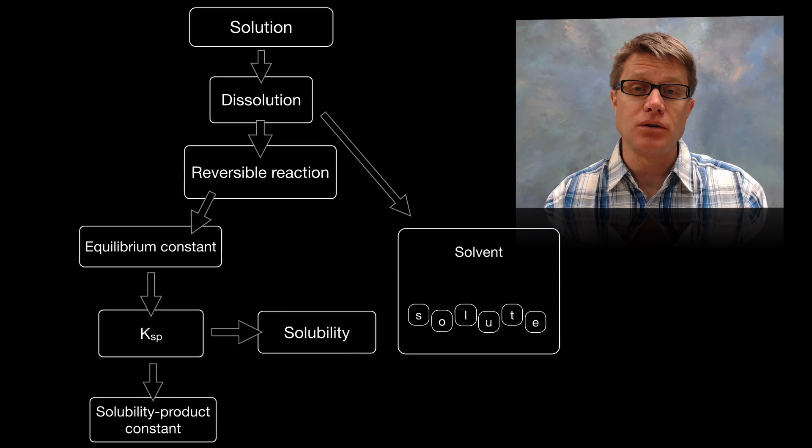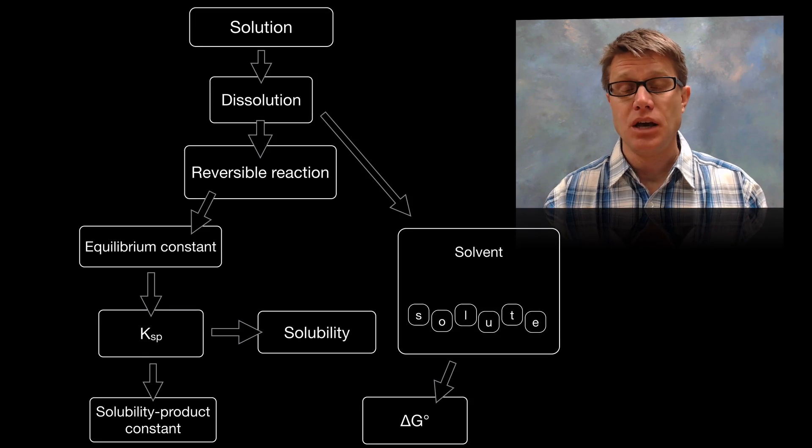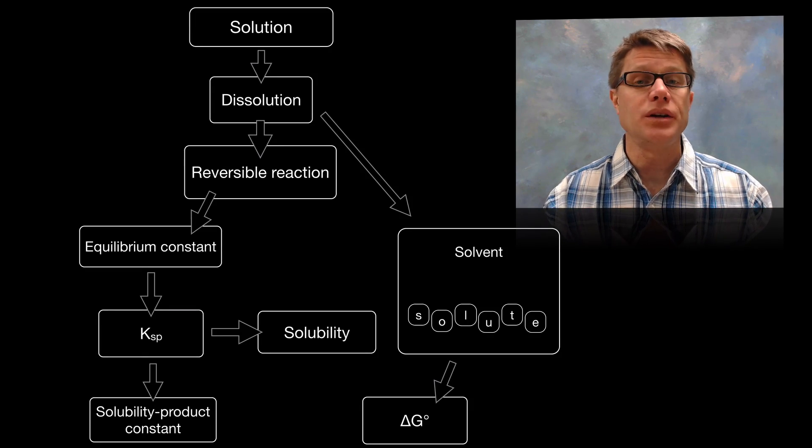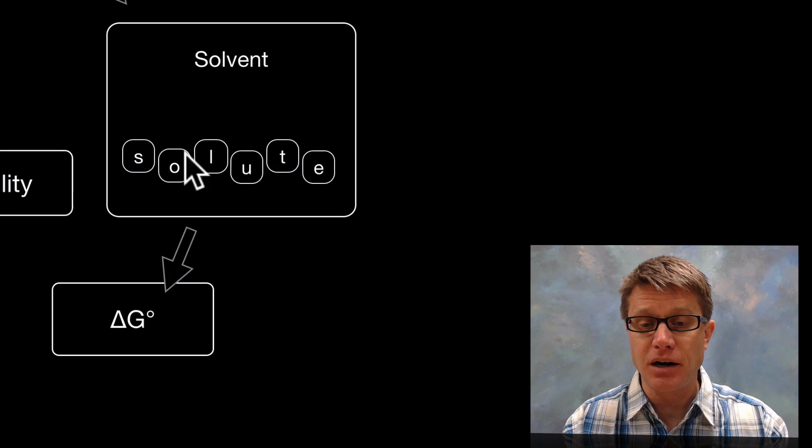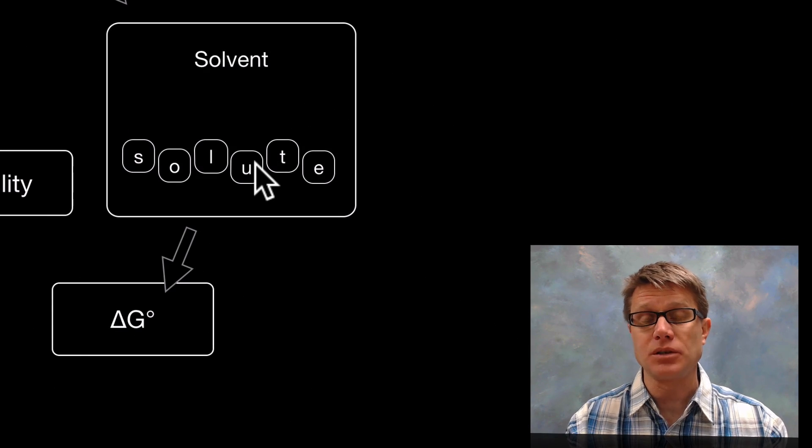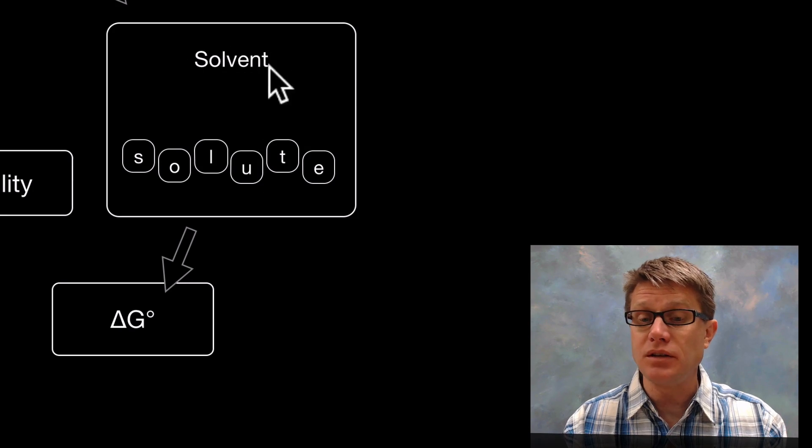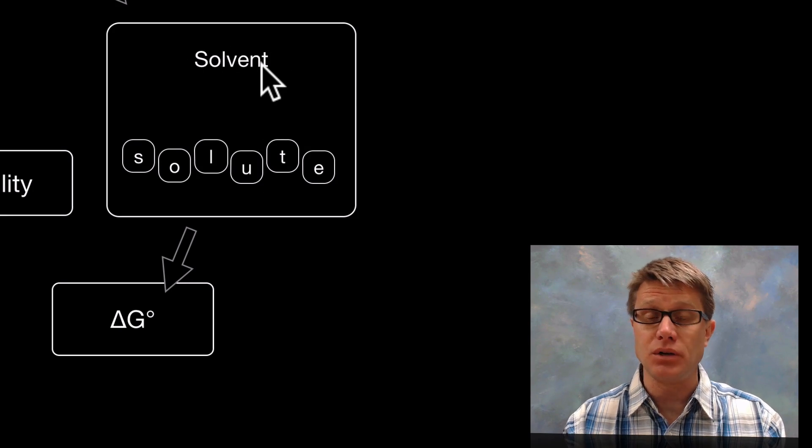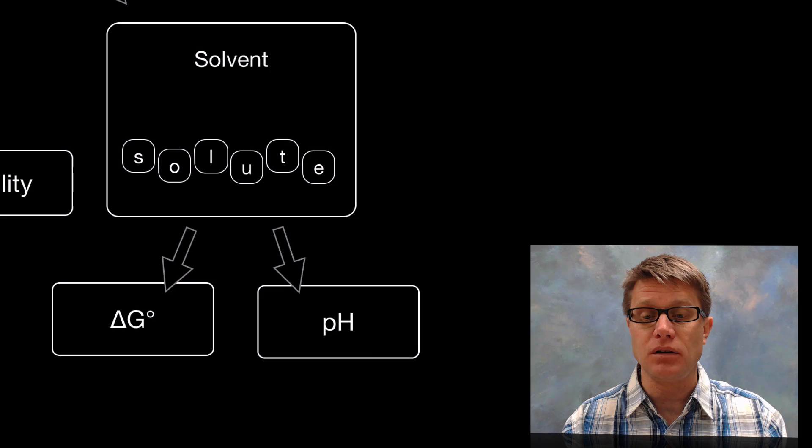And so there are a few things that are going to affect the solubility. One of the big ones is going to be delta G. In other words it's going to be the enthalpy. It's going to be the entropy of the system. Let's say that there are really intense bonds between these in the solid form. It's going to be hard for those to break apart into their ions. Likewise as we change what is in the solvent, if we add more ions to it, it's harder for more ions to be added. We could also change the pH. And that's going to affect what can be dissolved as well.